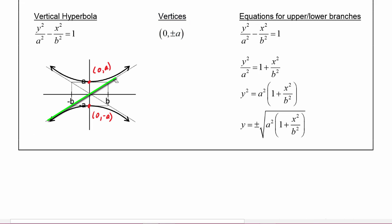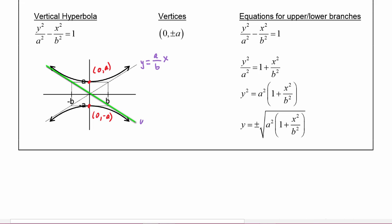This hyperbola also has two asymptotes. We use a and b to make a box, and the asymptotes go through the corners of the box. The y-intercept is (0, 0), so for the first asymptote, going up by a and to the right by b gives slope a/b and equation y = (a/b)x. For the second asymptote, going down by a and to the right by b gives slope −a/b and equation y = −(a/b)x.